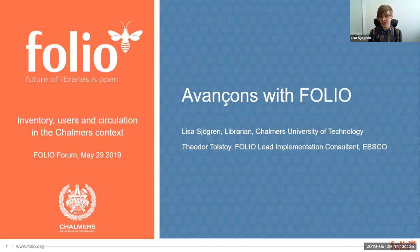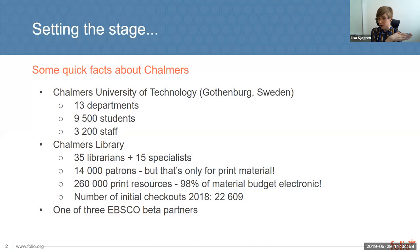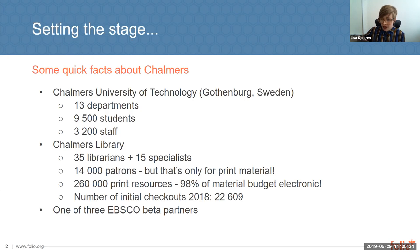The topic of this forum is the Bellis release. We want to show that from the Chalmers perspective, we have our own tenant with our data and some users, real and fake, that we've been testing and playing around with. We're going to take you through the basic workflows of getting bibliographic data into Folio, users, and doing circulation. Chalmers is a university in Sweden, science and technology. We have 13 departments and almost 10,000 students, a little over 3,000 staff.